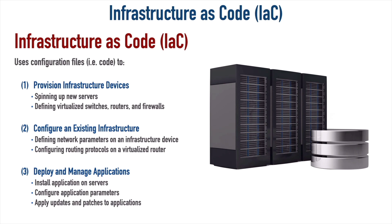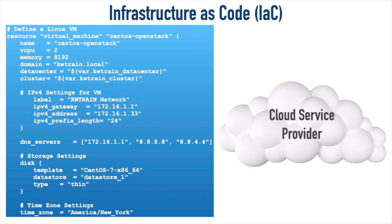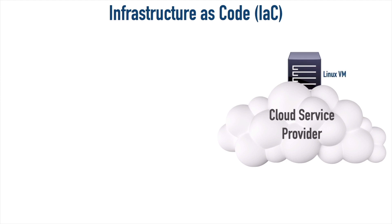Let me give an example of what this code might look like. Let's say we want to provision a Linux server. Here we have code defining a resource called virtual machine. For this VM resource, we see the name, it's going to have a couple of virtual CPUs, about 8GB of memory, the domain is kwtrain.local. The IP address is 172.16.1.33, we see the gateway, subnet mask length, DNS servers, and how we're provisioning storage on the hypervisor's datastore called datastore_one — thin provisioned, using New York time zone. We push that to our cloud provider and suddenly we've got a Linux VM defined.